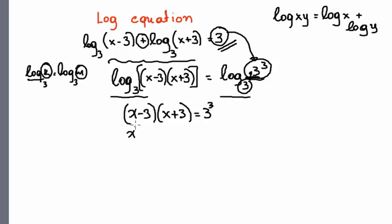This gives me x squared minus 9 because this is a difference of squares equals to 27. And this gives me x squared is equal to 36.